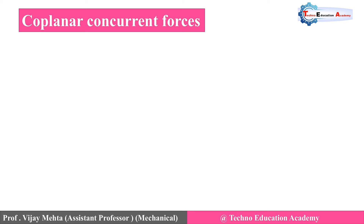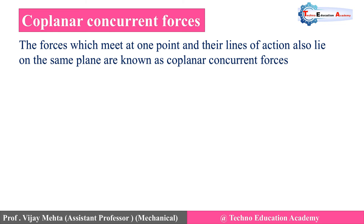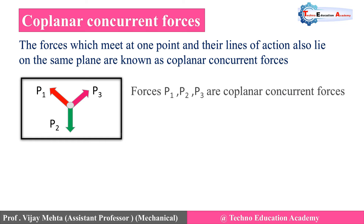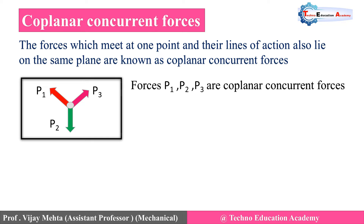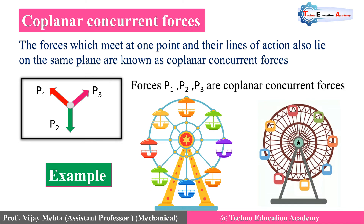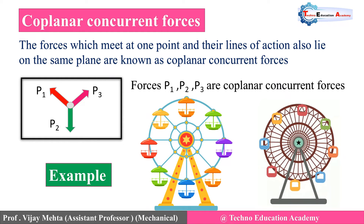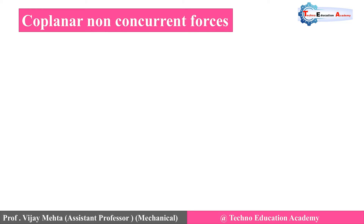The next type is co-planar concurrent forces. It is a combination of co-planar and concurrent, so the forces which meet at one point and whose line of action also lies on the same plane are known as co-planar concurrent forces. Here we are considering three forces P1, P2, and P3; they all meet at one point and their line of action is also in the same plane. An example is a giant wheel, where forces act on the same plane and also meet at one point.